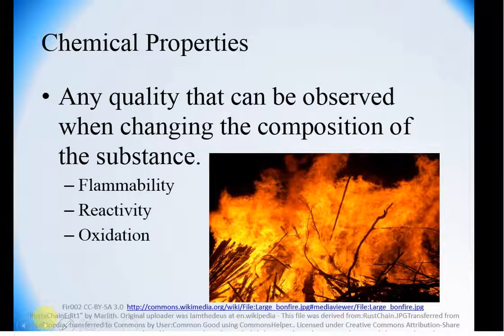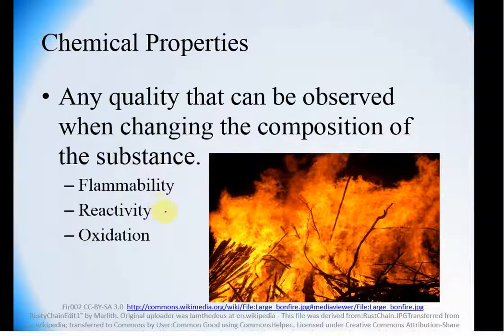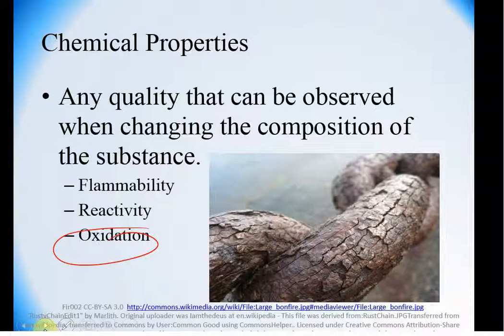Chemical properties can only be observed if you are going through a process that changes the composition or identity of the substance — reacting, burning, oxidizing. For example, if you burn a piece of wood you can't get that wood back — you have changed it from wood to ash. If you react something, you're going to get a new substance. If you oxidize metal, it is now going to be rust — it is no longer the same metal, it is now a new compound.